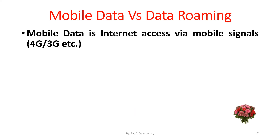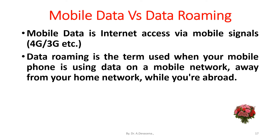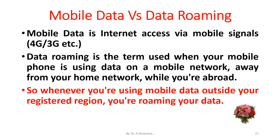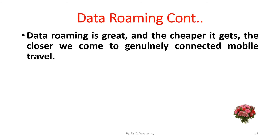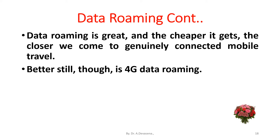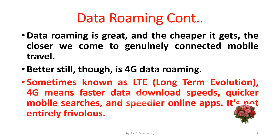Now we see mobile data versus data roaming. Mobile data is internet access via mobile signals — that is 3G, 4G, etc. Data roaming is the term used when your mobile phone is using data on a mobile network away from your home network while you are abroad. So whenever you are using mobile data outside your registered region, you are roaming your data. Data roaming is great and the cheaper it gets, the closer we come to genuinely connected mobile travel. Even better is 4G data roaming, sometimes known as LTE (Long Term Evolution), which means faster data download speeds, quicker mobile searches, and speedier online apps.